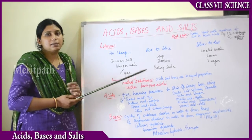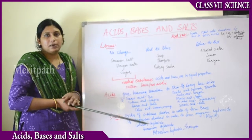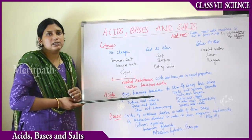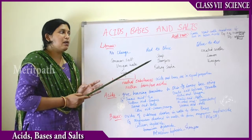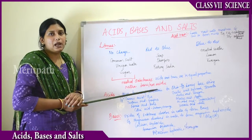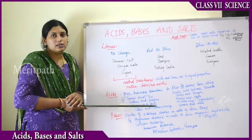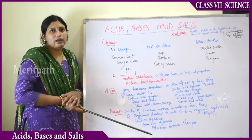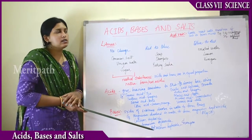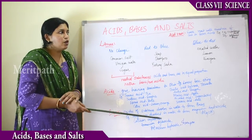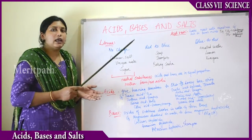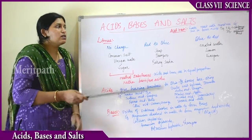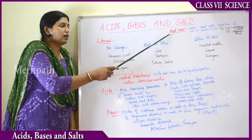Acid rain sometimes damages buildings and causes corrosion, damages plants, and harms animals. Acid rain is not a good phenomenon — it occurs due to excessive air pollution.